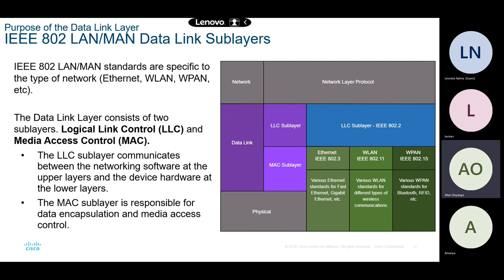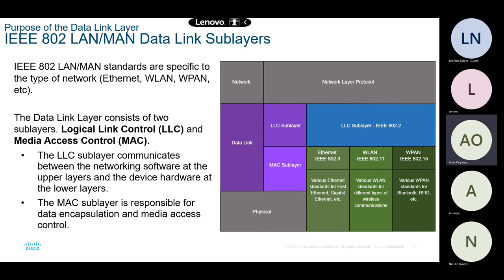Each sub-layer has its own function. The LLC sub-layer communicates between the network software at the upper layers and the device hardware on the lower layers. The MAC sub-layer is responsible for data encapsulation — it encapsulates the packet to form the frame — and it controls how the upper layers can access the physical media such as fiber optic, copper, and wireless.